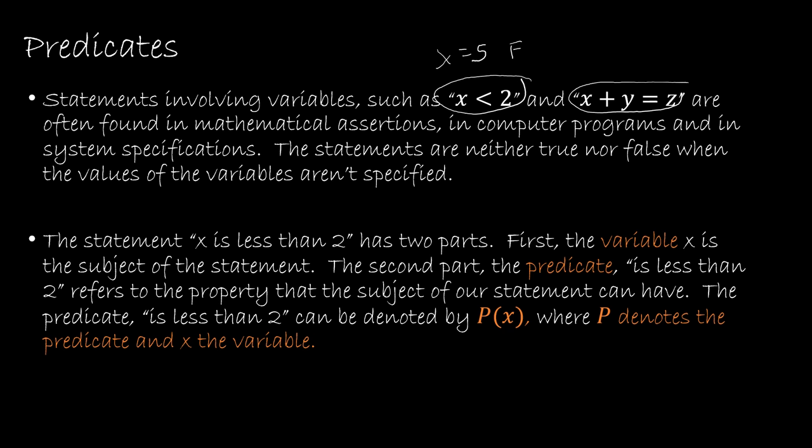So the statement x is less than 2 has two parts. The variable obviously is x. So x is the variable and it could be any variable just like in normal algebra. And that's obviously the subject of the statement. The second part is called the predicate which is what we're learning about. The predicate is less than 2 gives us some sort of property that the variable is subject to.